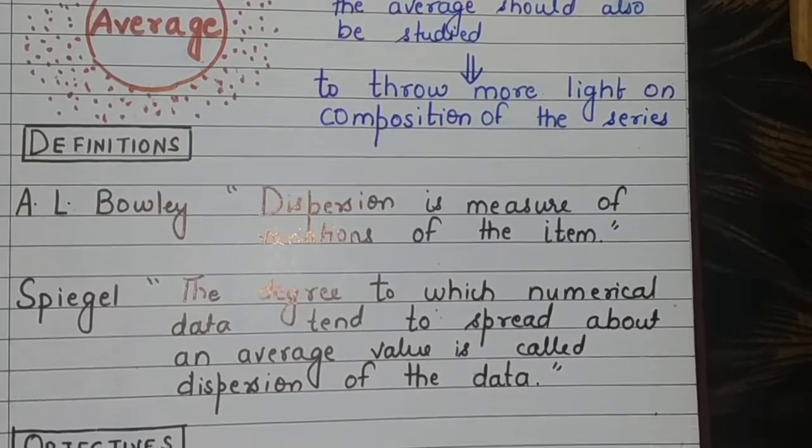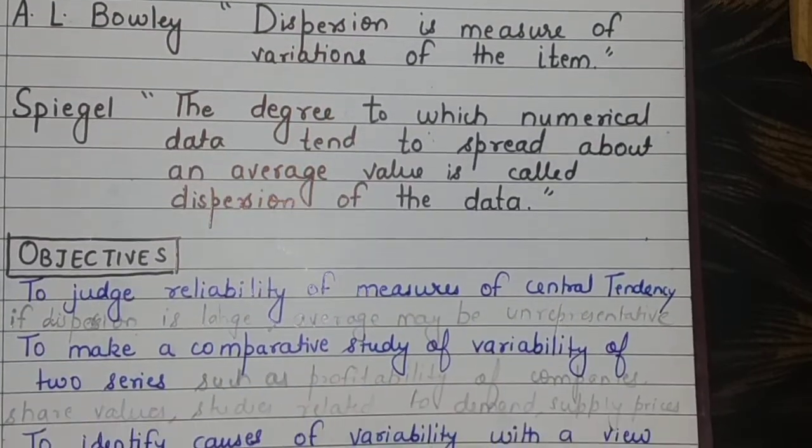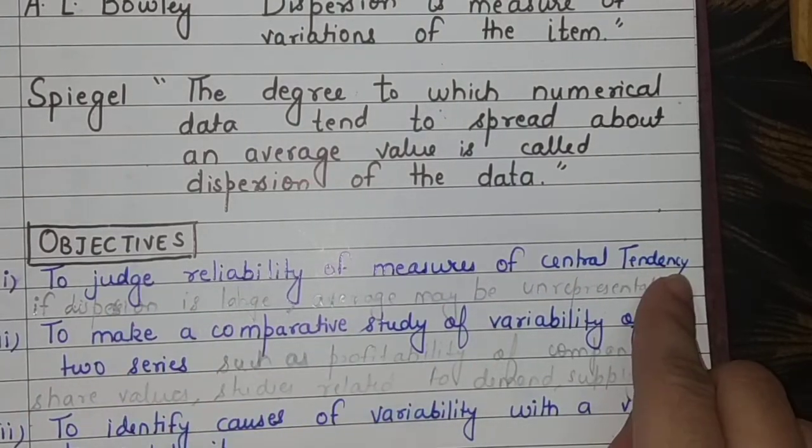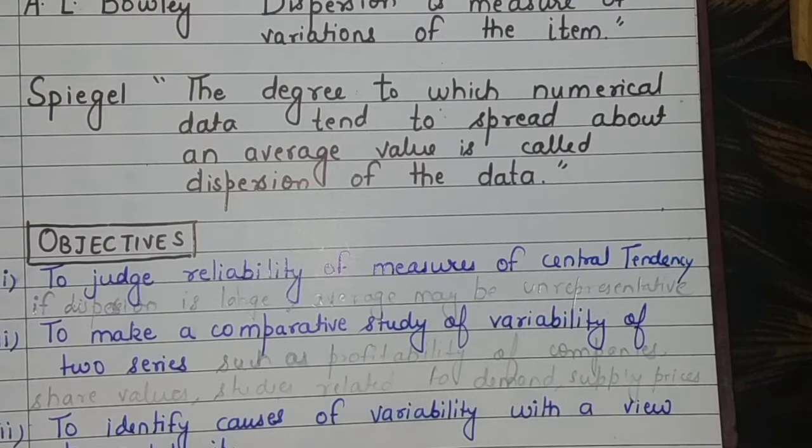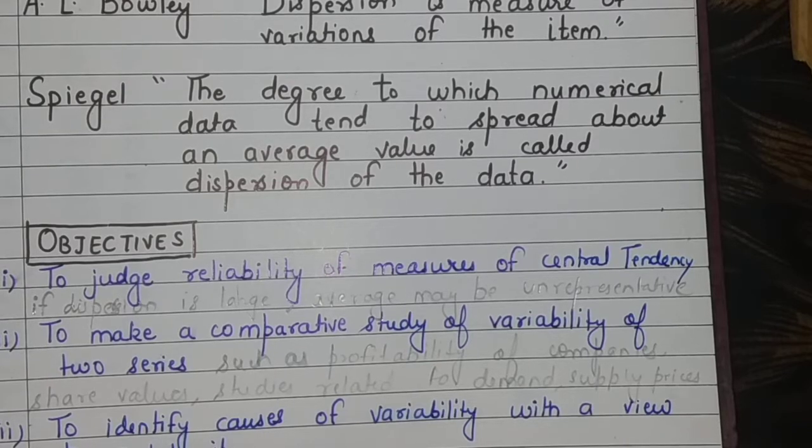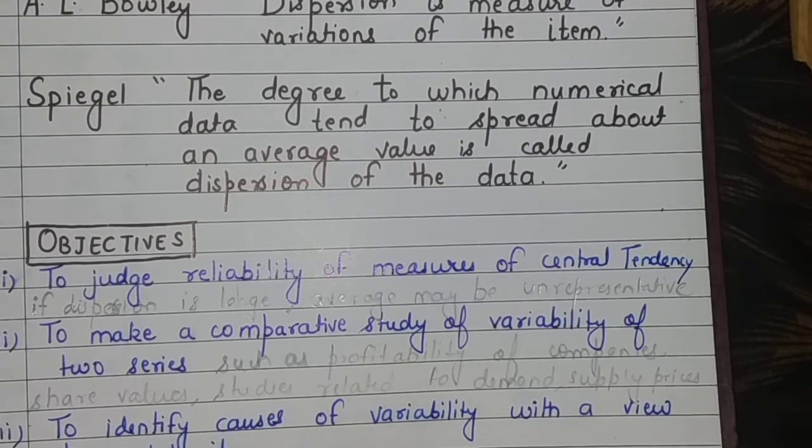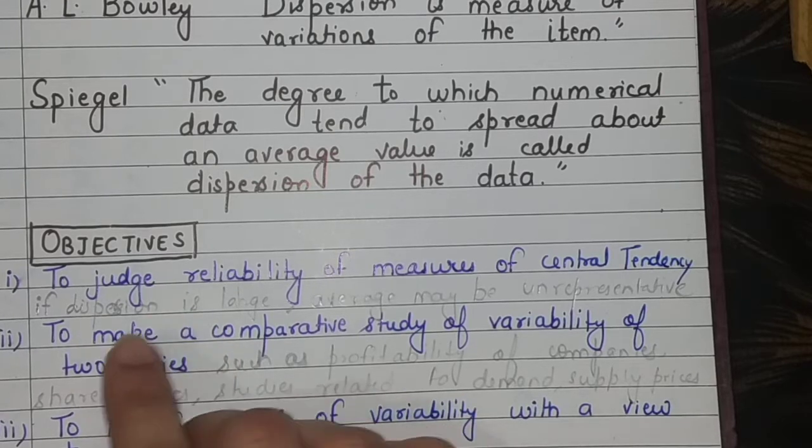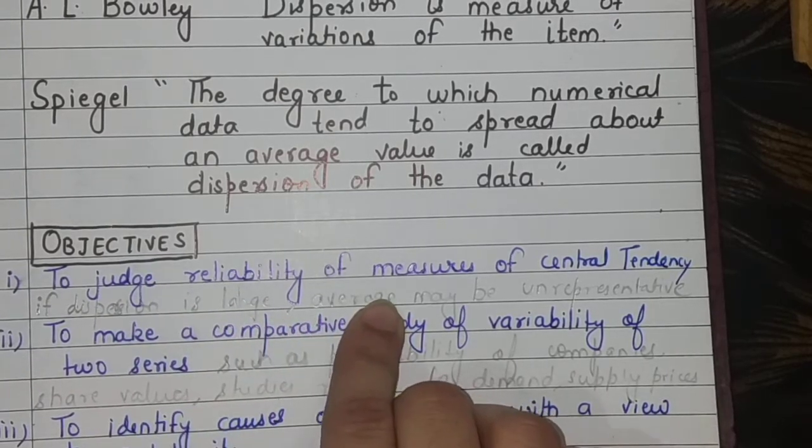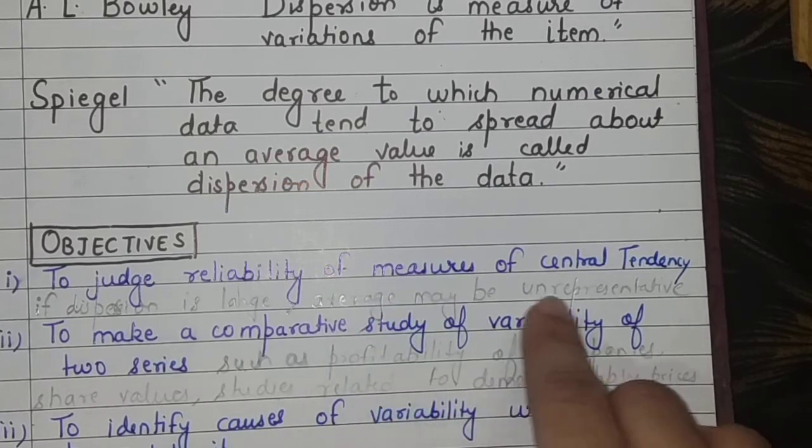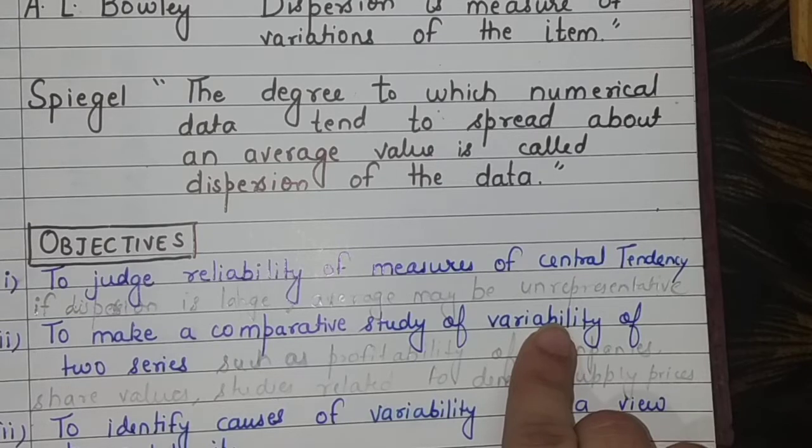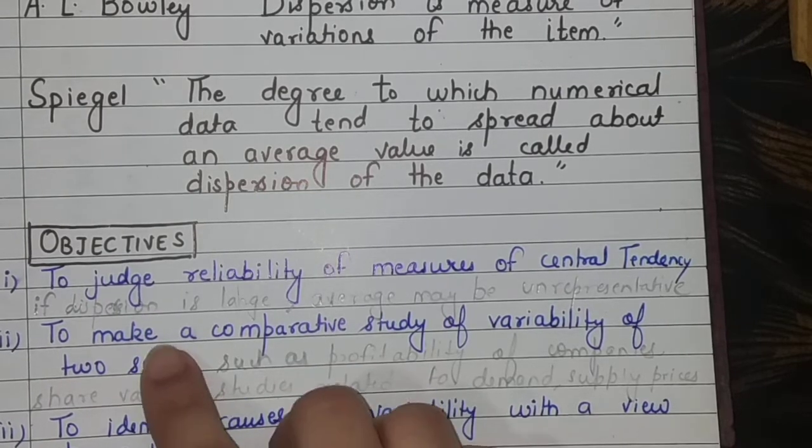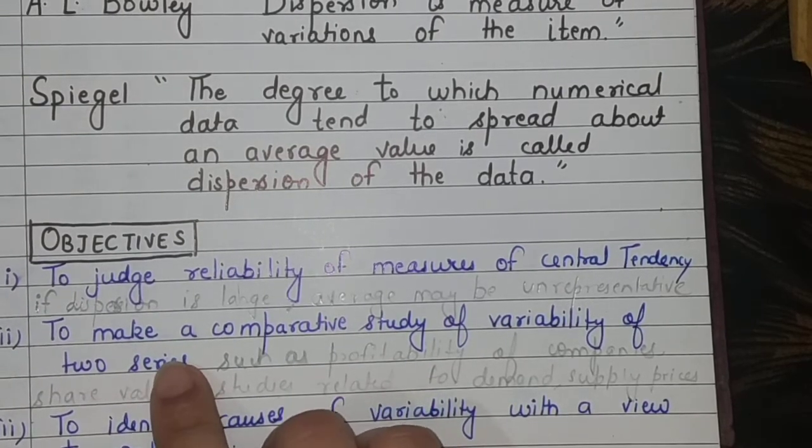Now, why do we need to calculate this dispersion level? What are the objectives? Number one, to judge the reliability of the measures of central tendency - arithmetic mean, geometric mean, harmonic mean, median, mode, quartile, percentile. If our dispersion level is very large, this means our chosen average is not correct, because it is not representing the data truly. And how do we know this? By calculating dispersion level. If dispersion is high, this means your measures of central tendency choice is wrong.